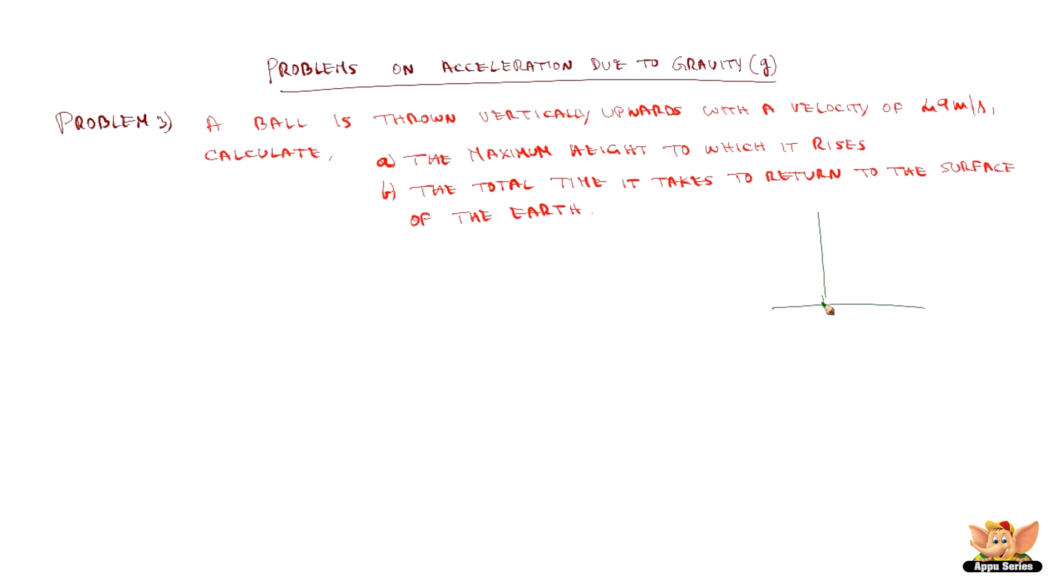To understand it better, let's see what are the given values. A ball is thrown upward with an initial velocity of 49 meters per second and it reaches a maximum height h, where the final velocity v is zero. Acceleration due to gravity is negative since it's thrown upwards and velocity is reducing, so g is minus 9.8 meters per second squared.